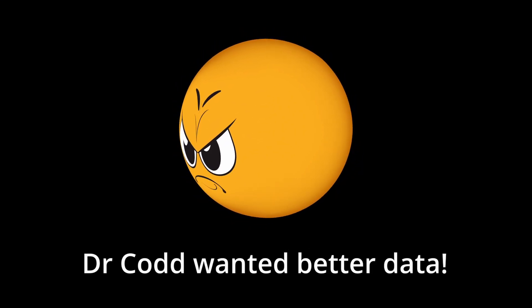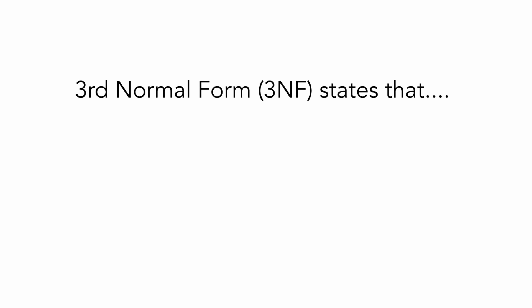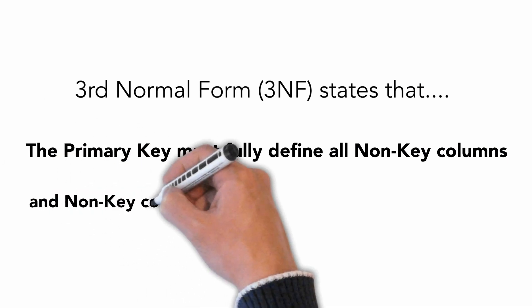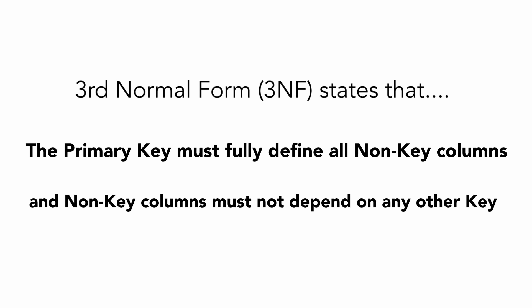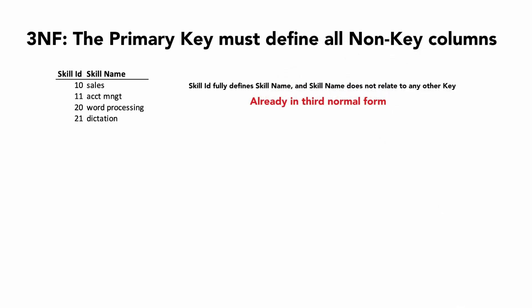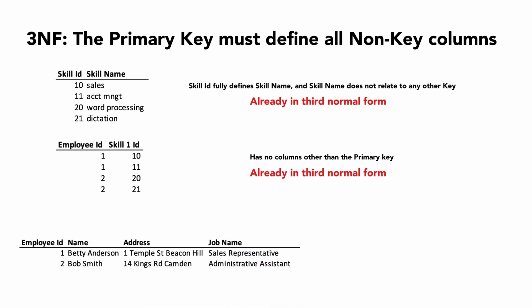Dr. Codd still wasn't happy and introduced a set of rules called third normal form. Third normal form also focuses on the primary key and states that the primary key must fully define all columns, and columns must not depend on any other key. Let's examine our spreadsheets again. In skills, skill ID defines skill name, and skill name does not relate to any other key — so it satisfies third normal form. In employee skills, employee ID and skill ID have no other columns, and hence satisfy third normal form. In employee, employee ID defines name and address, and name and address do not relate to any other key — and hence satisfy third normal form.